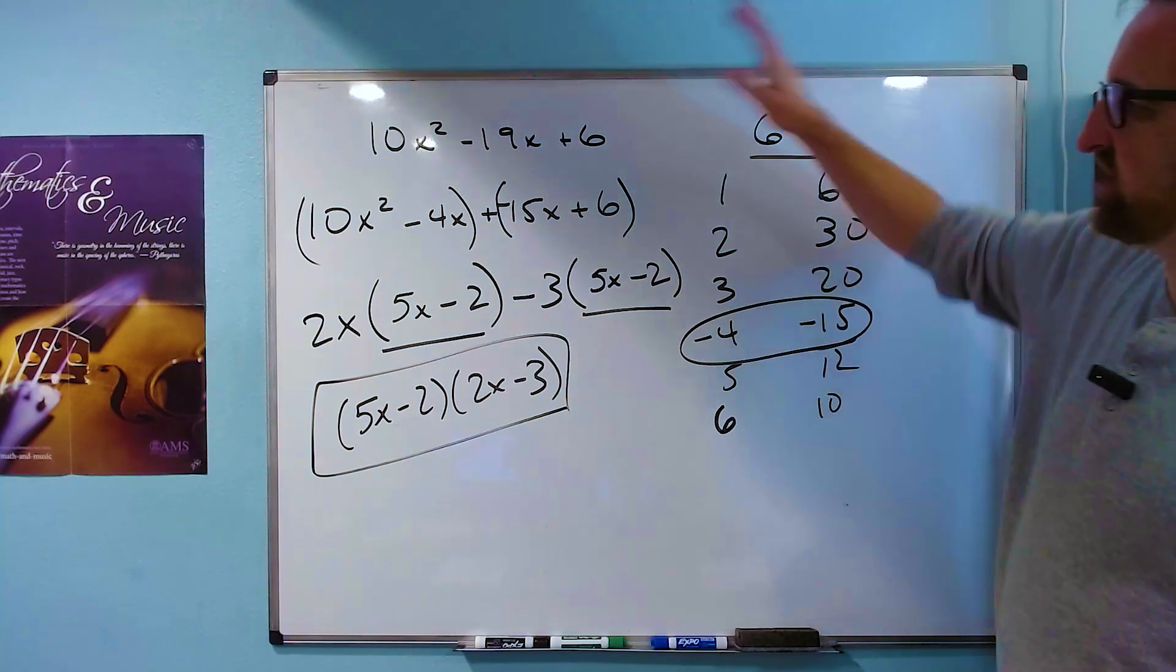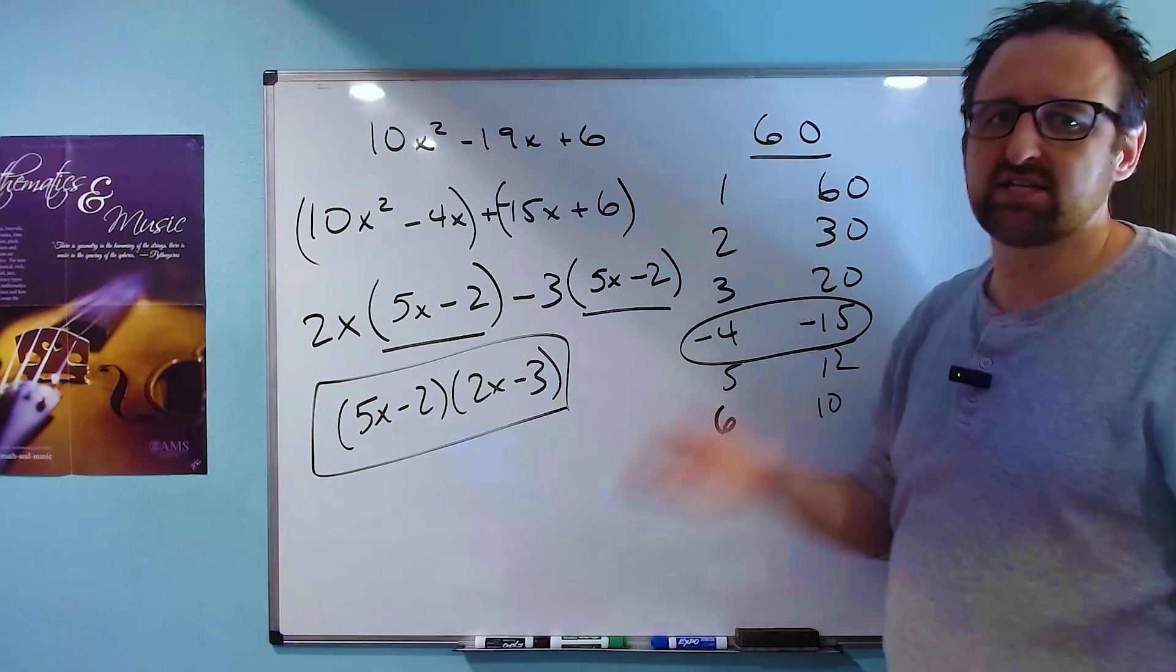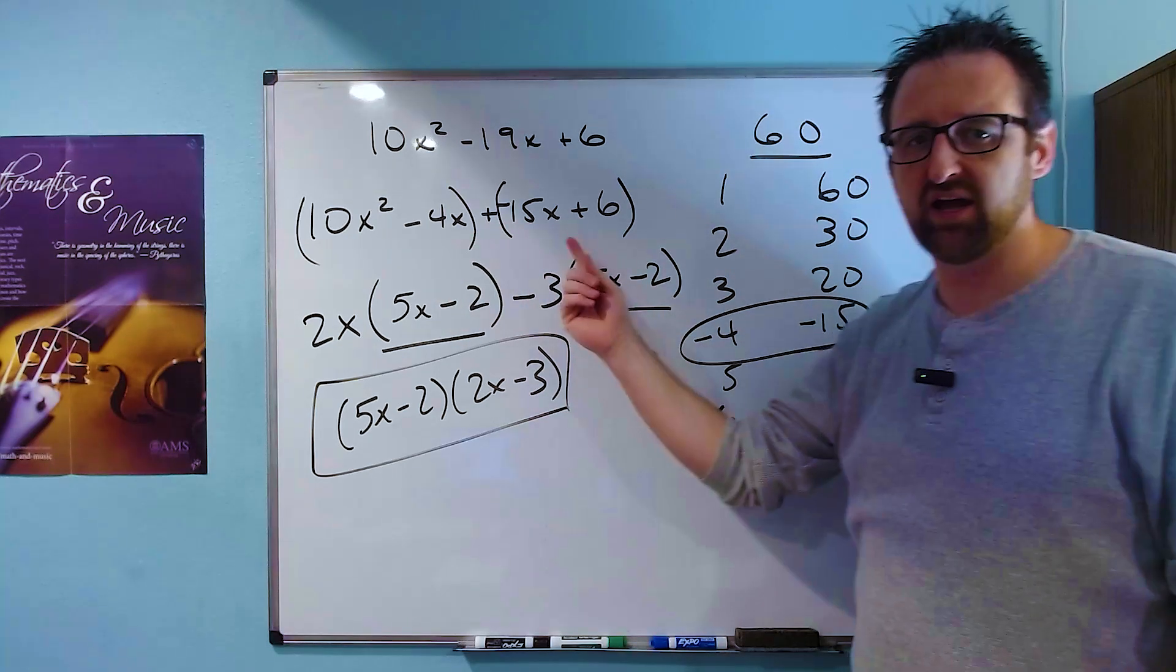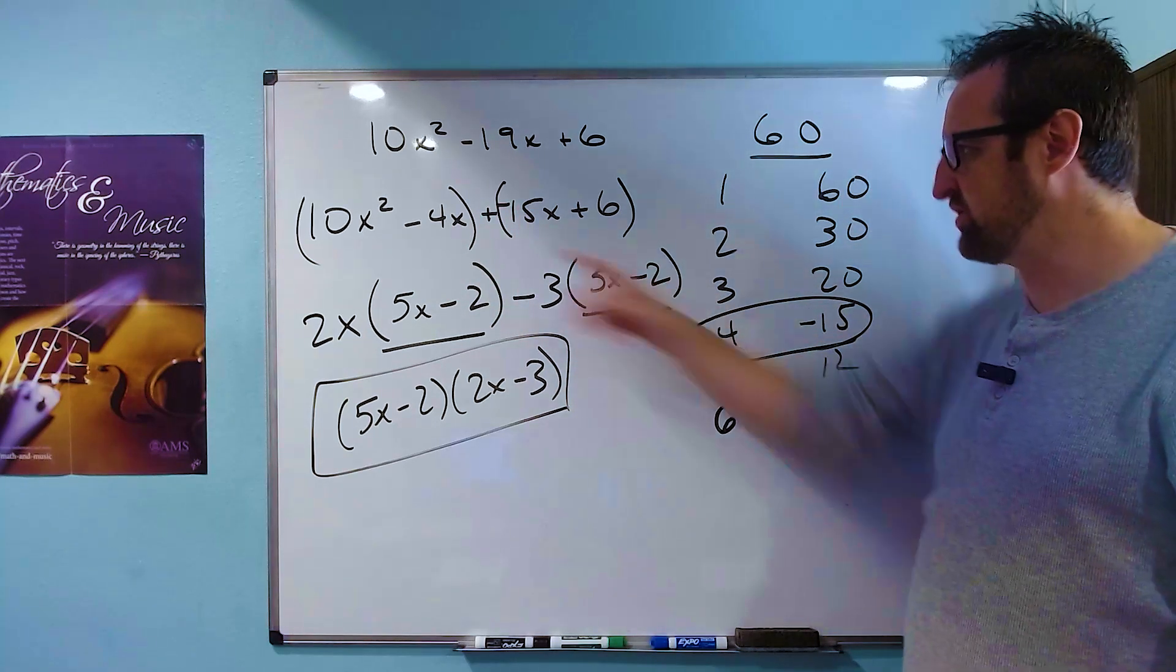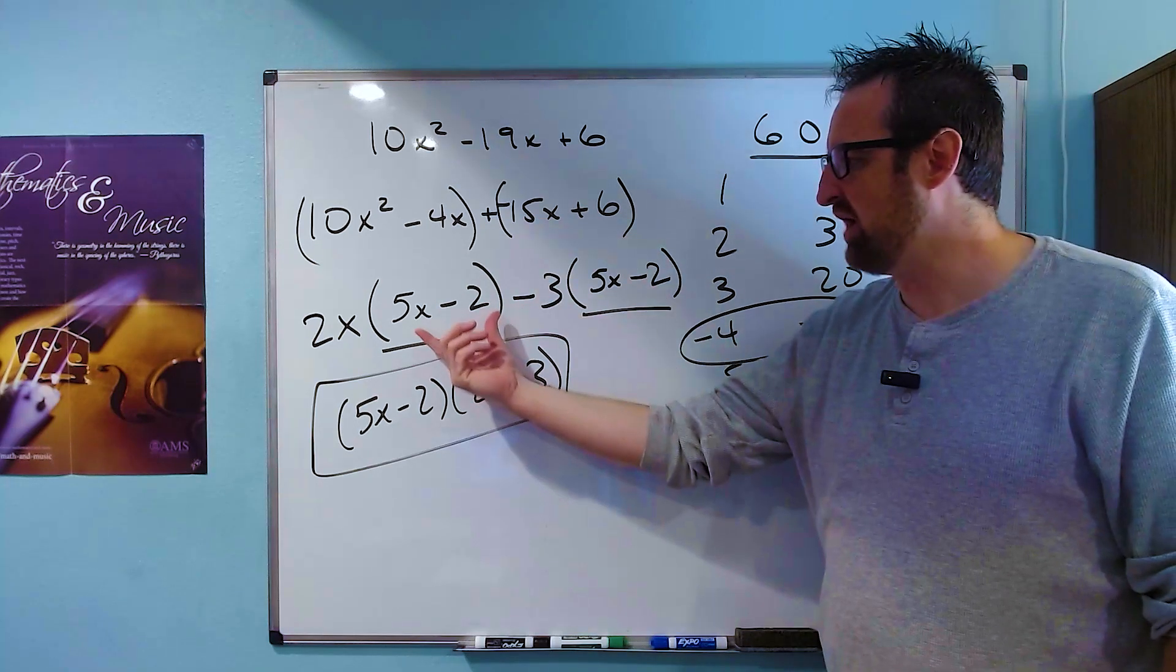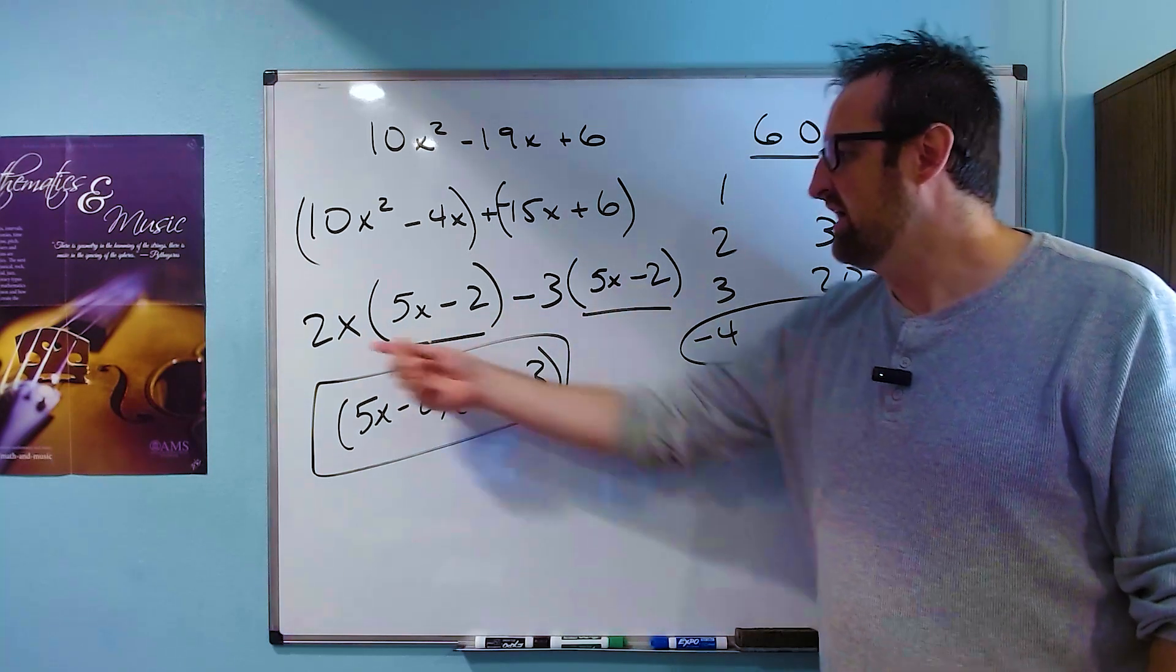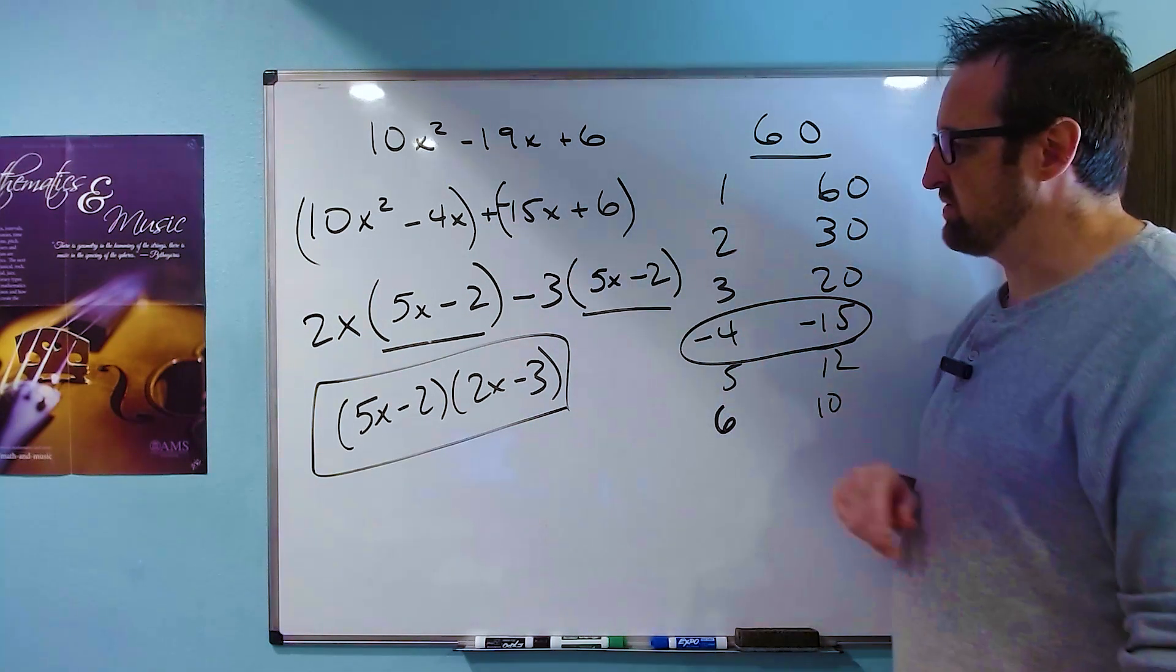So again, the challenge here is just the fact that the arithmetic gets a little bit trickier. But the process is identical every single time. One thing I'll mention here, you'll notice that I picked negative 4 and negative 15 and ordered them this way. In fact, it actually doesn't matter which order you put them in. You can swap the order. What that'll do is when you get down to this step, it'll swap which factor is the common factor. So it doesn't matter which order you put those in.